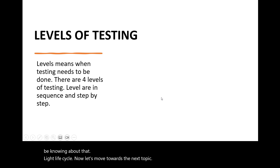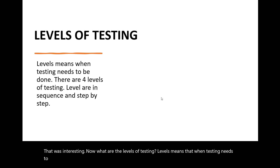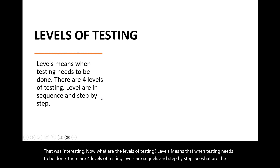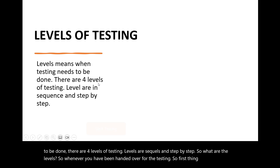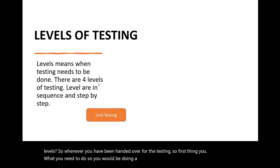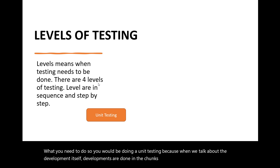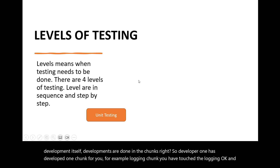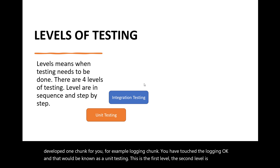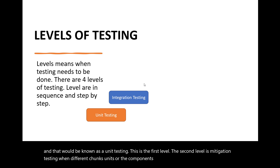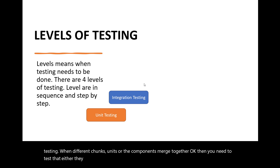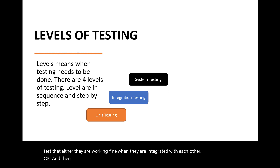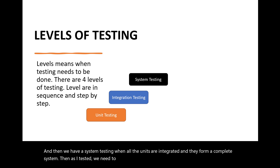Next topic is levels of testing. Levels of testing are sequential and step-by-step. The first level is unit testing — developers develop software in chunks, so you test each individual chunk. For example, a developer builds a login module and you test just that — that's unit testing. The second level is integration testing — when different chunks or components are merged together, you test whether they work correctly when integrated with each other.